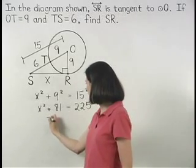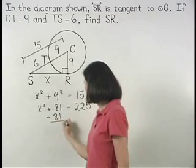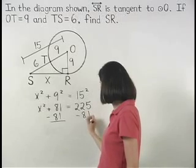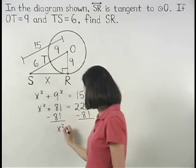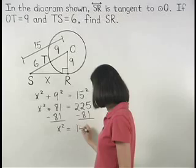And subtracting 81 from both sides gives us X squared equals 144.